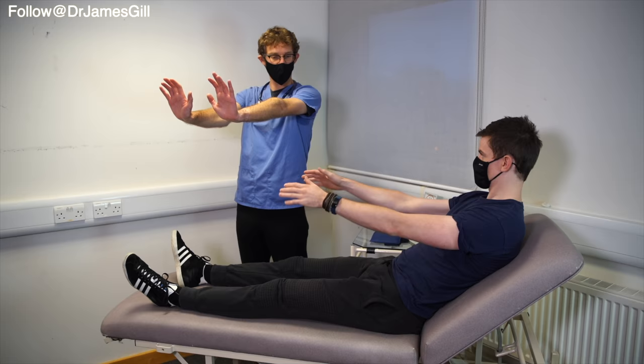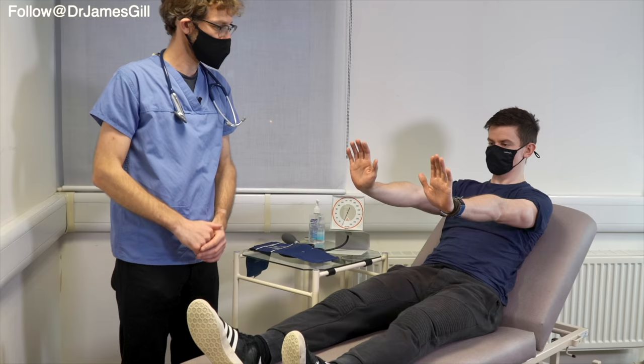So having looked over the hands we can move backwards a little bit more toward the arm and we need to check for something called an asterixis. With the thyroid examination we've checked for a fine tremor but here we're getting the patient to cock their wrists back and arms outstretched we may see a beating tremor.